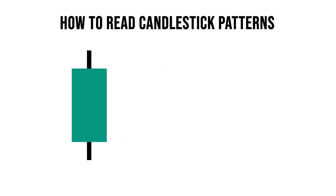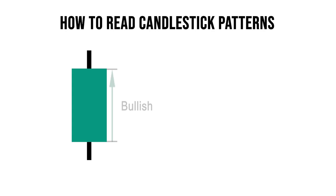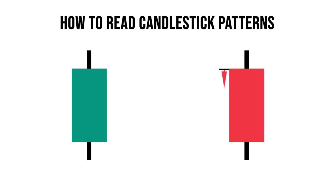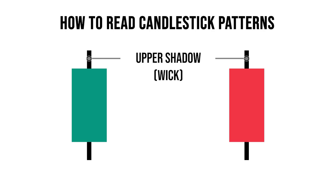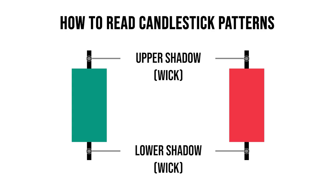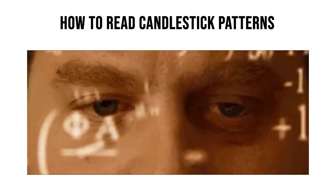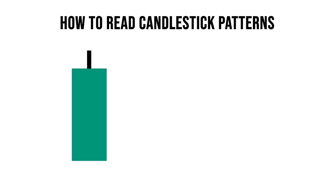Candlesticks are typically presented as either green or red. The color is determined by the relative positions of the open and close, or simply the body. When we see a candlestick with a green body, it means the price closed higher than the opening value — this is known as a bullish bar or candle. A candlestick with a red body means the price closed lower than the opening value — this is known as a bearish bar or candle. We can determine who's in control by looking at the size of the body and wicks, both independently and relative to each other.